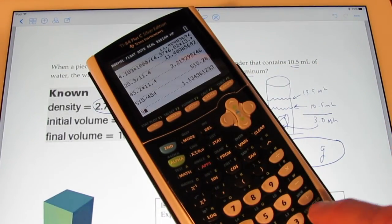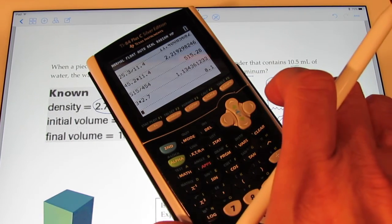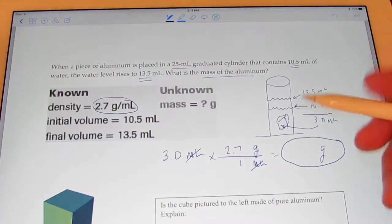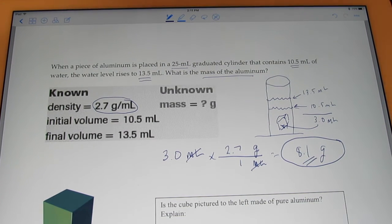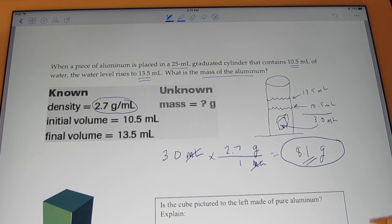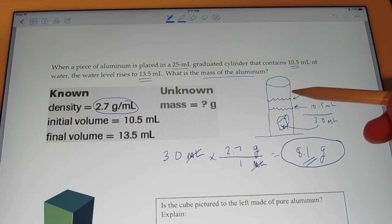Looks like I'm allowed two significant figures. So, we have 3 times 2.7. 8.1 is what my calculator says. 8.1 grams. That would be the mass of that chunk of aluminum that I put in my graduated cylinder.